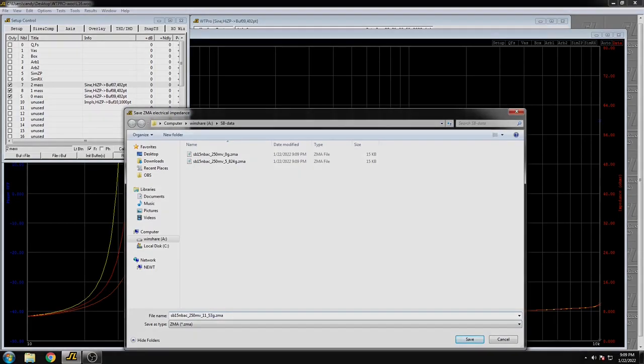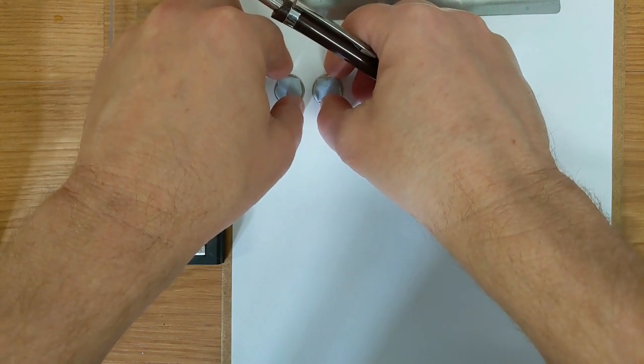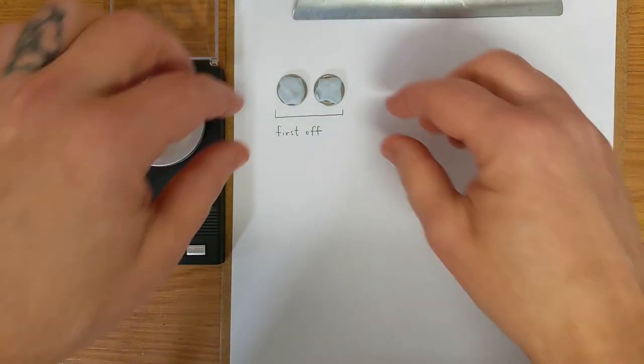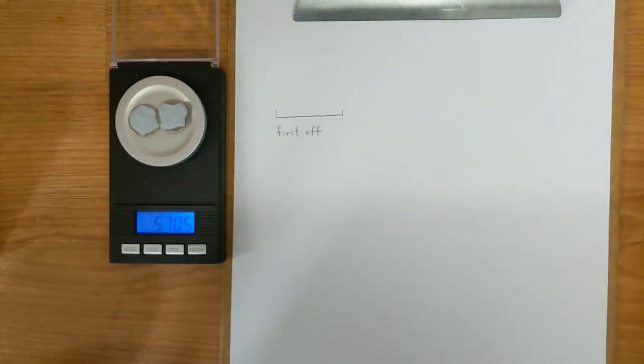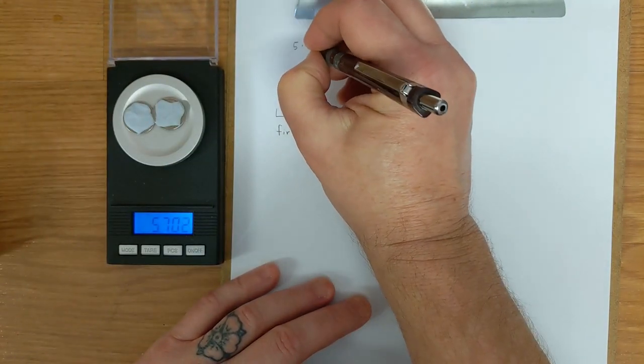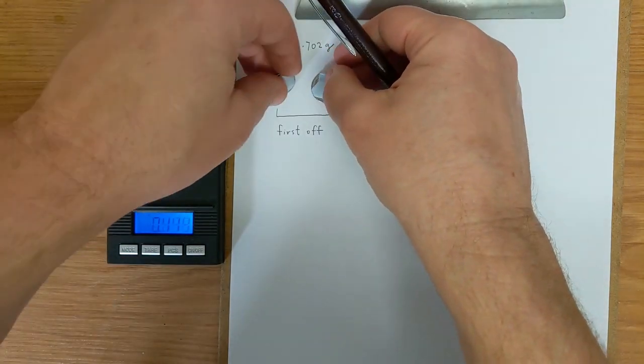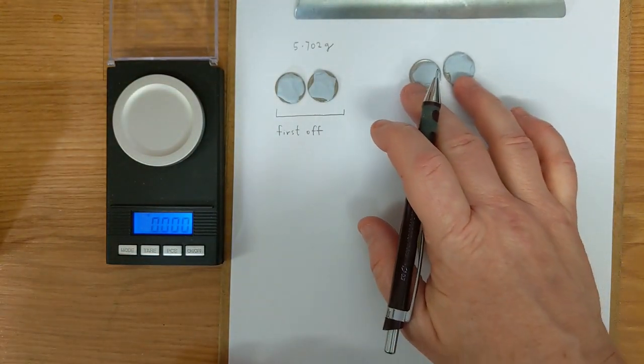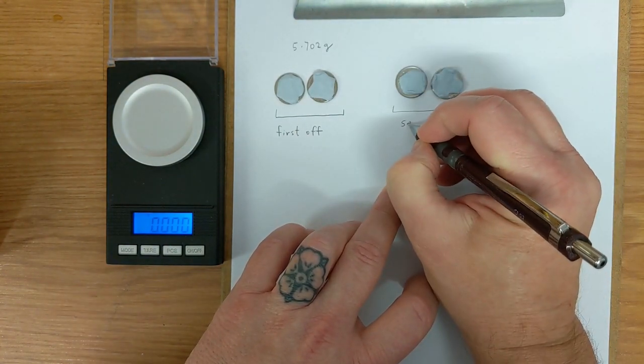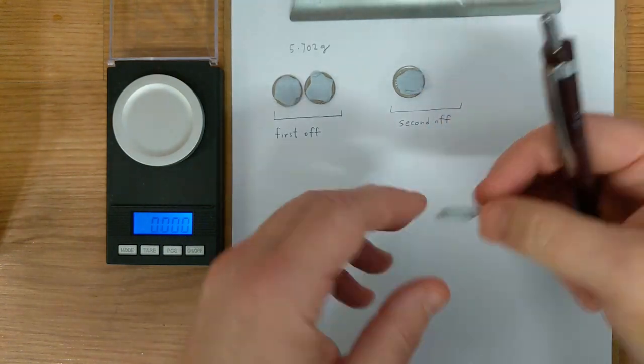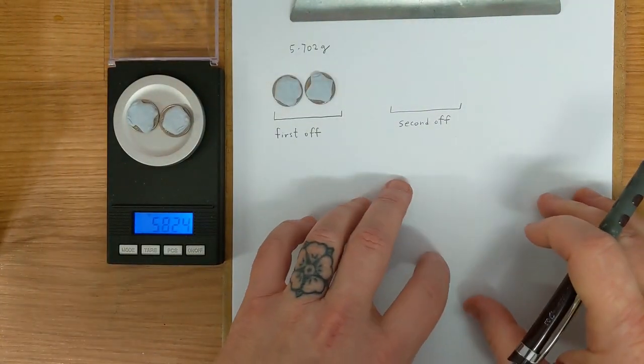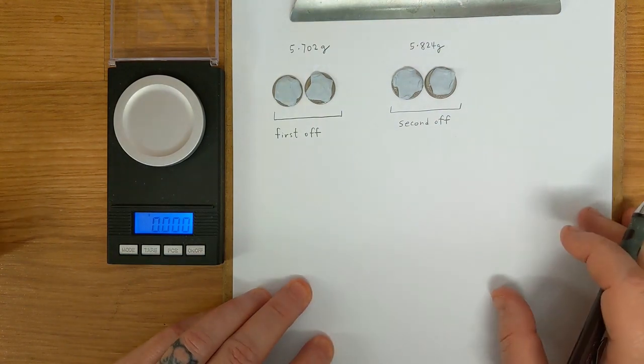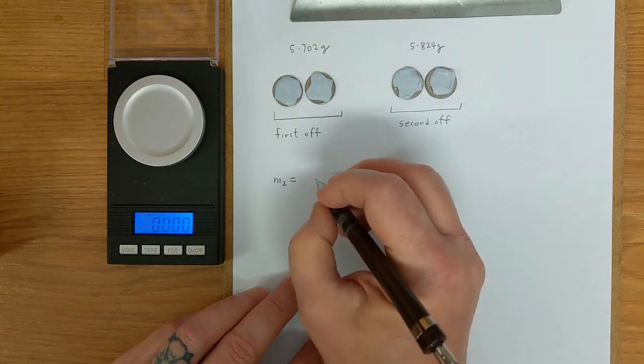The last thing that remains to be done is to weigh the added masses. I start with the first two masses that I took off the cone. 5.7 grams. Then the second two masses that came off the cone. Five point, a little bit more, 5.8 grams. But it doesn't matter. They don't have to be exactly the same. As long as the values are known precisely, that's all that matters. So now the total added mass, the M2 you would enter in the web app, is the sum of the two.